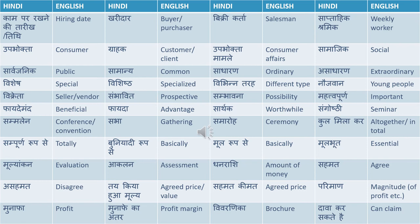Samajik means social. Sarvajenik means public. Samanya means common. Sadharan means ordinary. Asadharan means extraordinary. And if you just have the word extra, then we say atirikt. So additionally or in extra — we say atirikt.